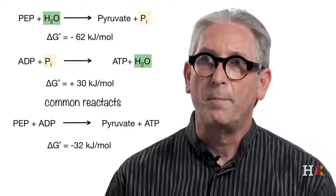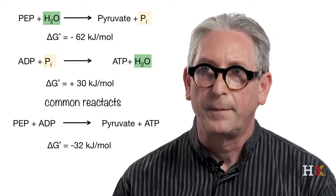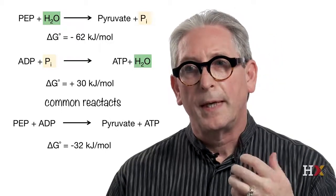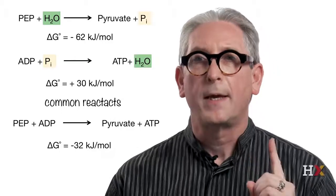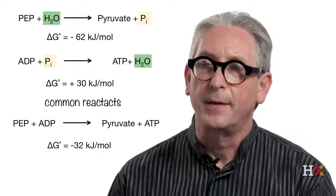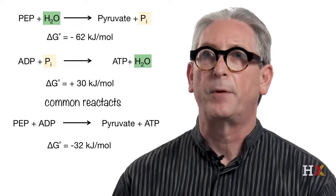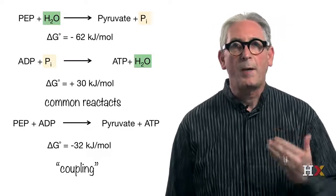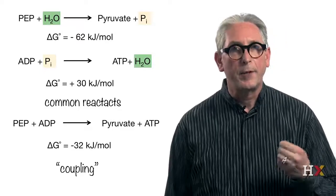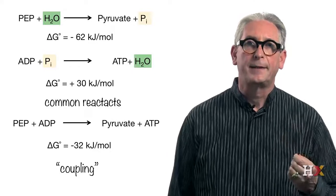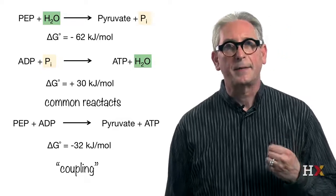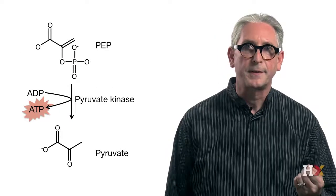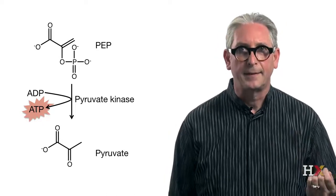Therefore, this combined reaction is thermodynamically favorable and can lead to the synthesis of ATP. The combining of reactions where one energetically unfavorable reaction is driven by another energetically favorable reaction is what is called reaction coupling. Coupling is most commonly achieved when the combined reactions share a common reactant, have a net change of free energy that is negative, and are catalyzed by the same enzyme. For example, the coupling between the dephosphorylation of phosphoenolpyruvate and the synthesis of ATP is catalyzed by pyruvate kinase — a single enzyme.